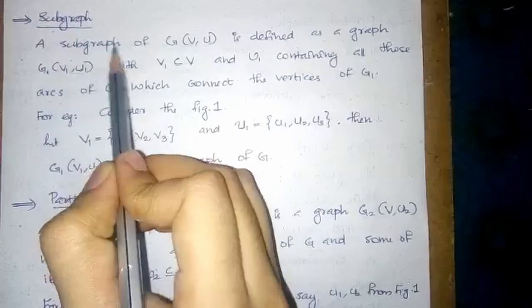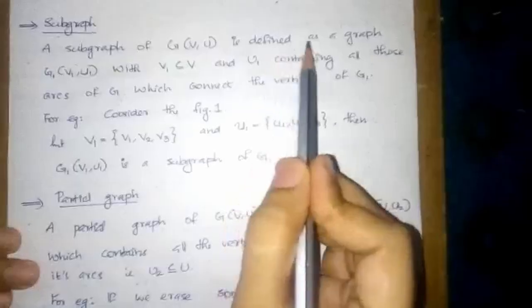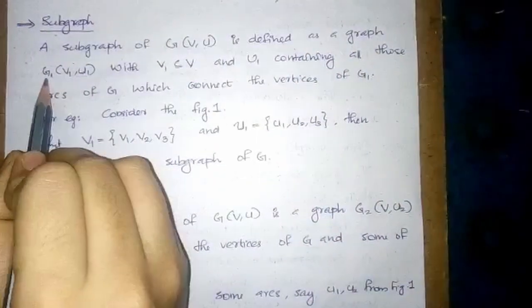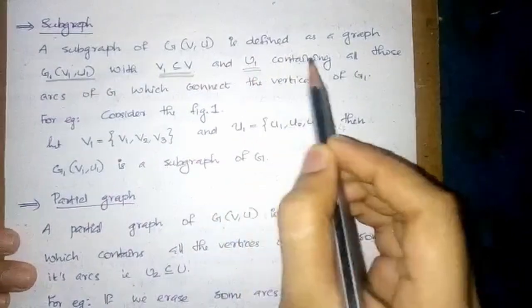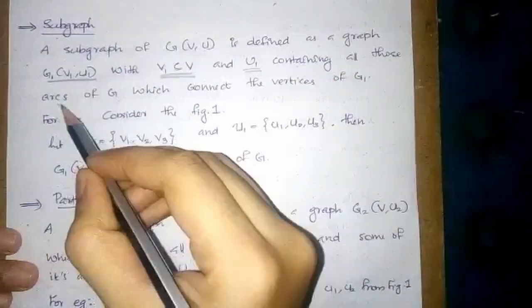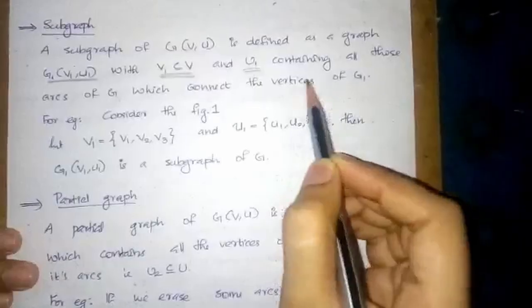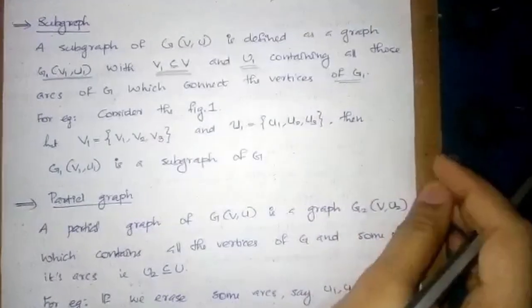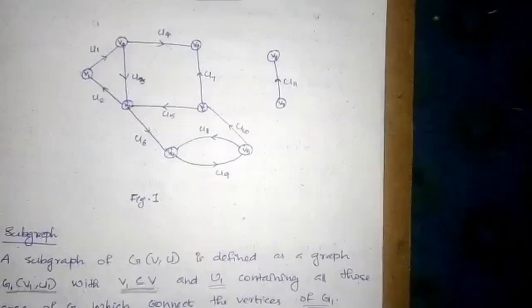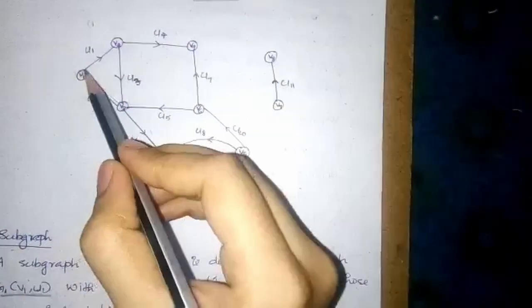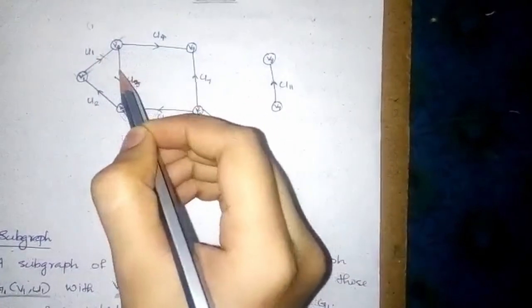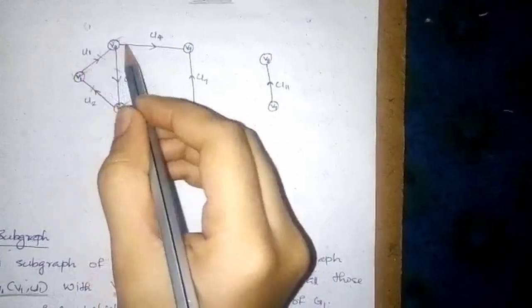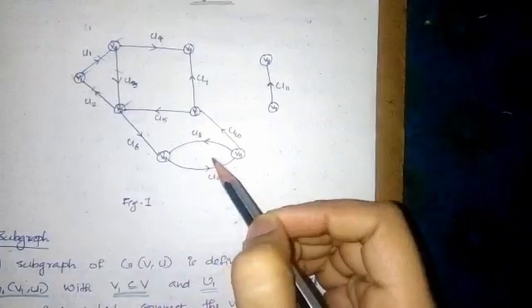Subgraph. A subgraph of G(V,U) is defined as a graph G1(V1, U1) with V1 a subset of V and U1 containing all those arcs of G which connect the vertices of G1. Consider figure 1. Let V1 = {V1, V2, V3} and U1 = {U1, U3, U2}. Then this is a subgraph of the graph.